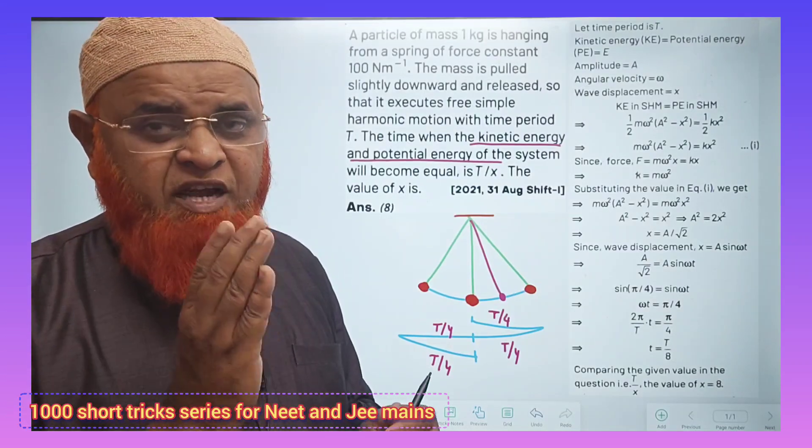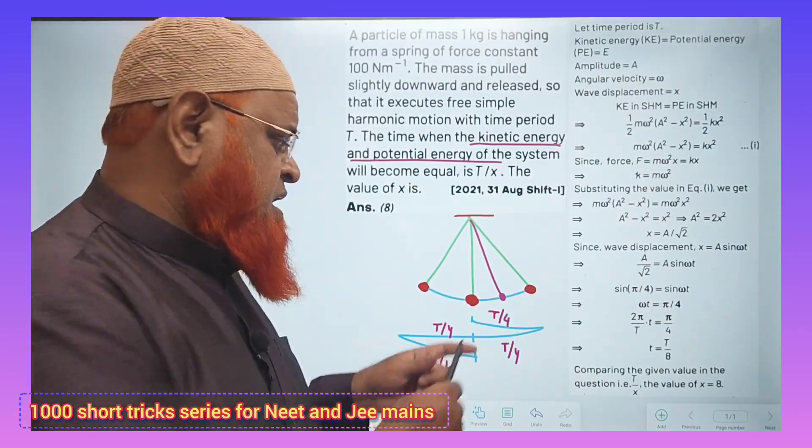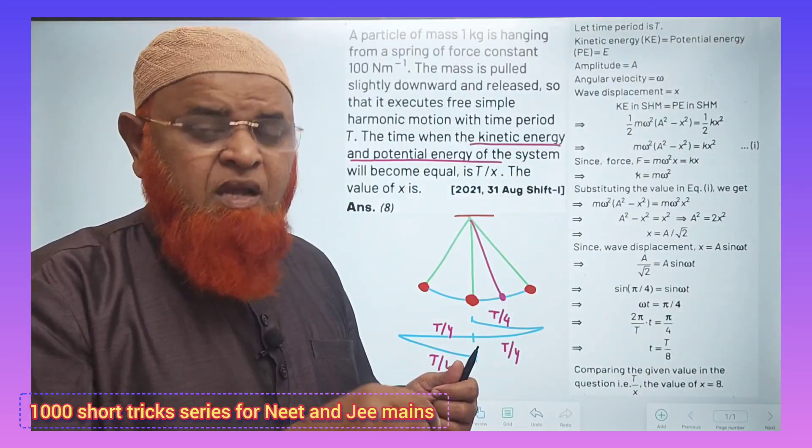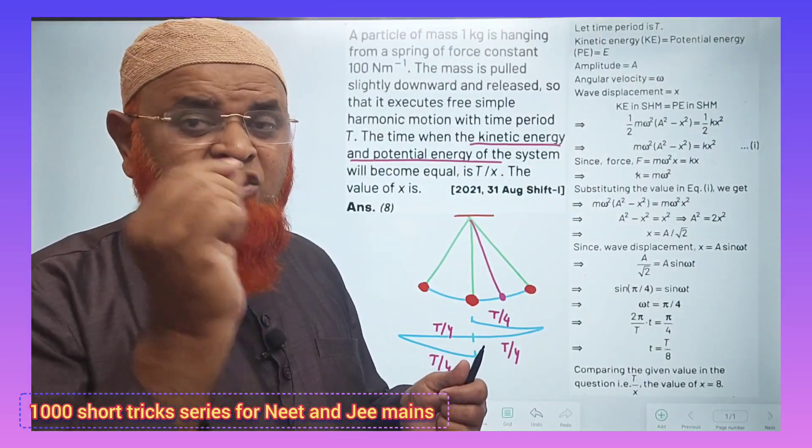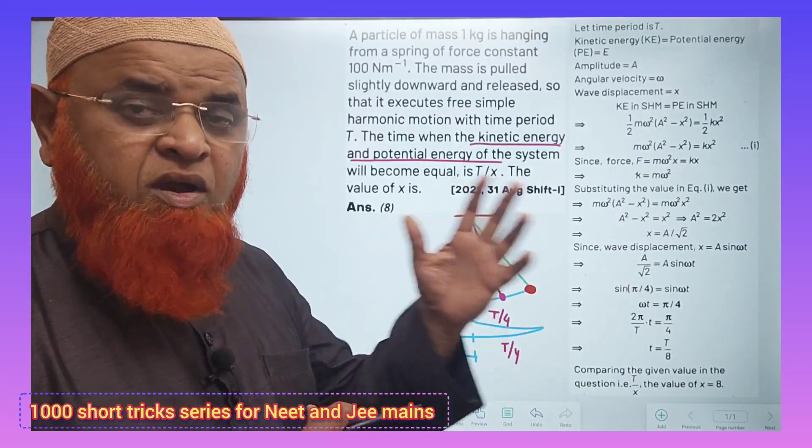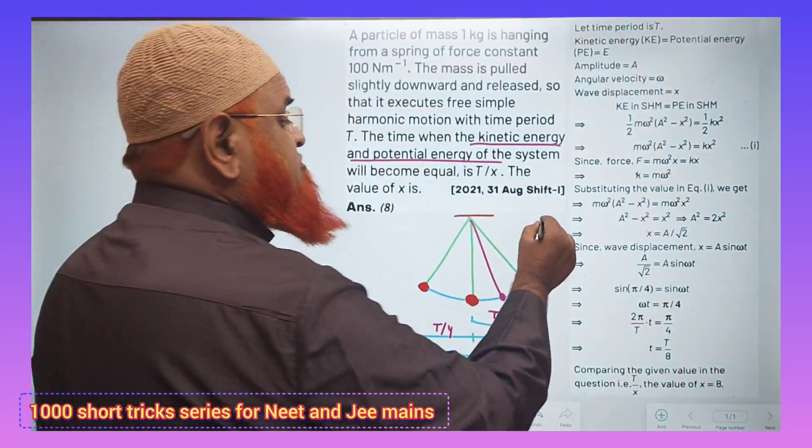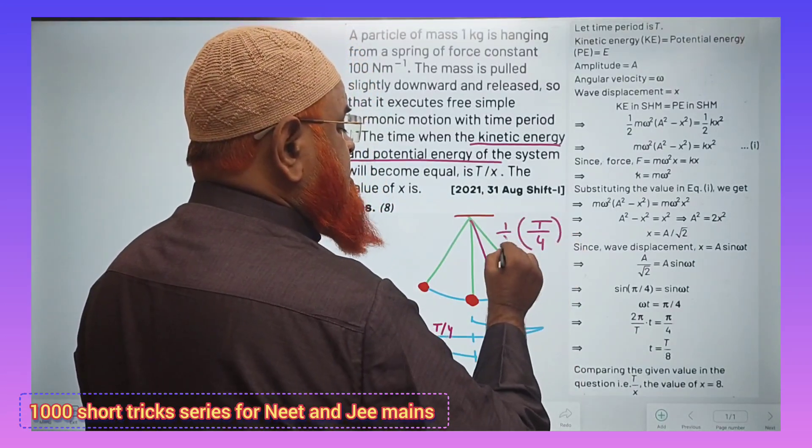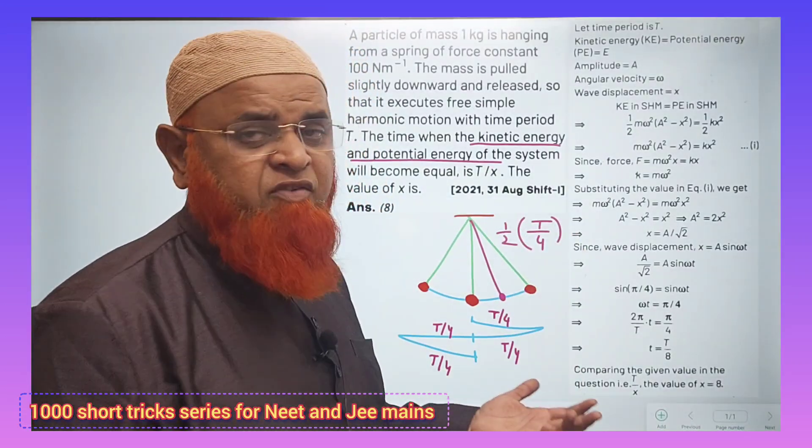Exactly half of the time. From here to here, if the time period is T/4, then exactly at half of the time potential energy will be equal to kinetic energy. What is half of T/4? Half of T/4 is nothing but T/8.